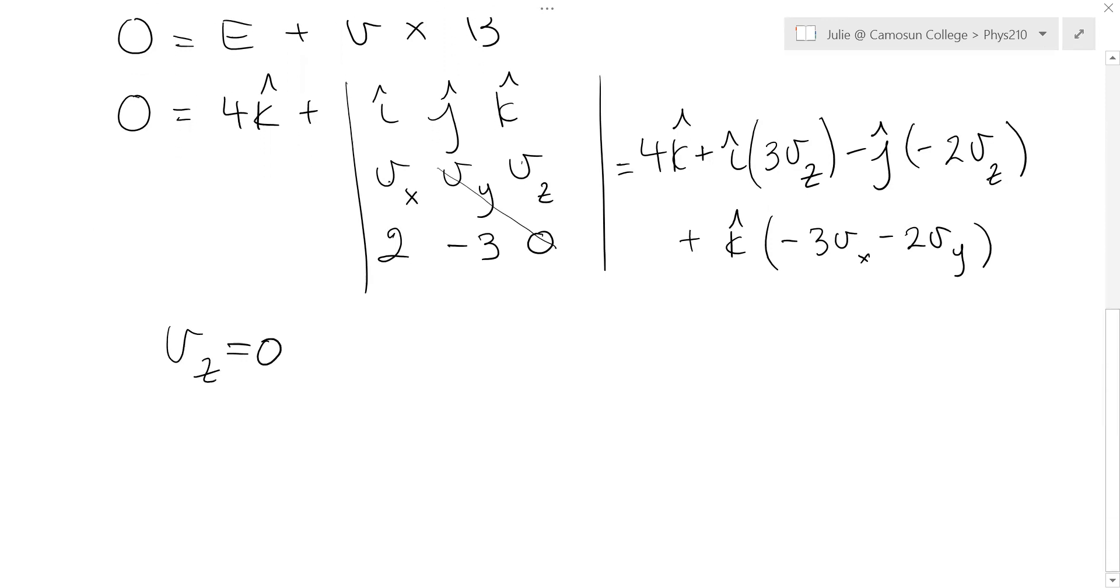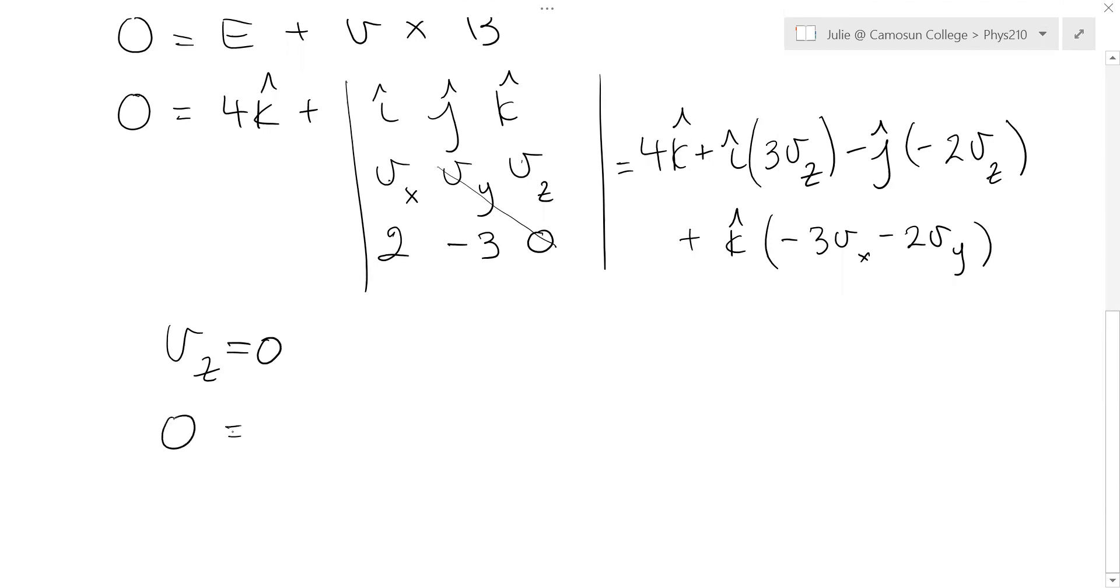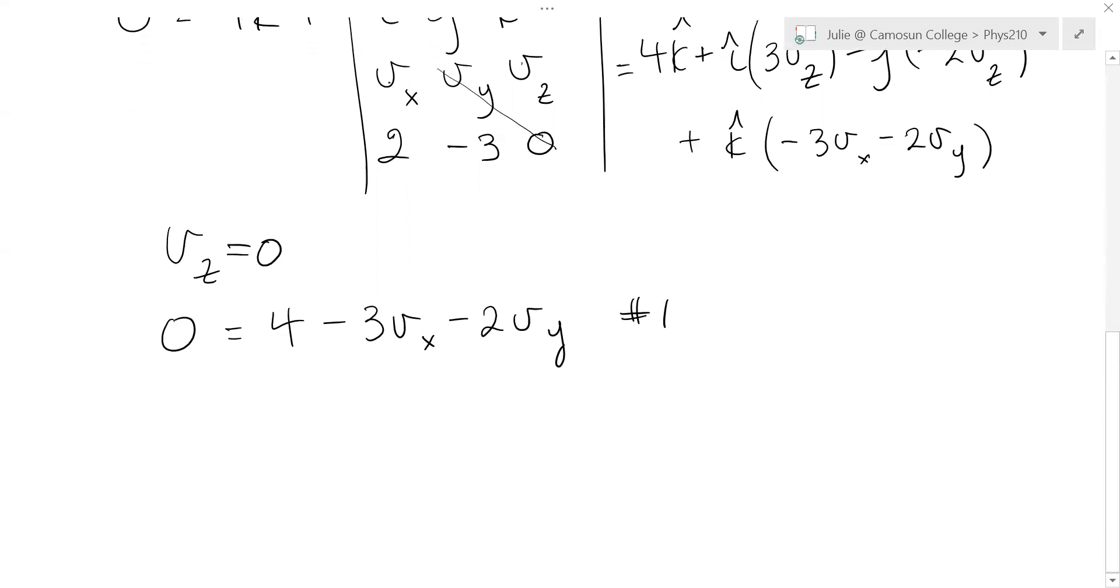And then let's look at the k components. What do we have? On the left we have zero, we have four k hat minus three Vx minus two Vy. That's the k hat component. So that's equation number one. It still has two unknowns, both Vx and Vy. So let's look at what else we know about this velocity.